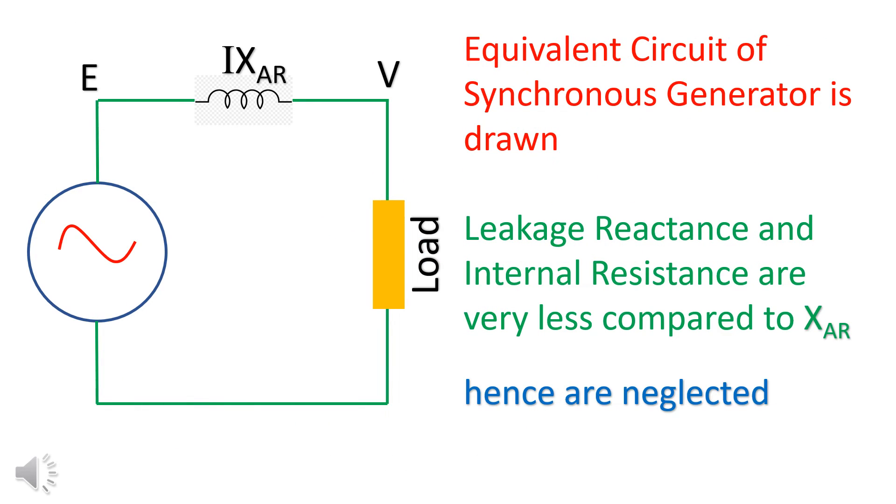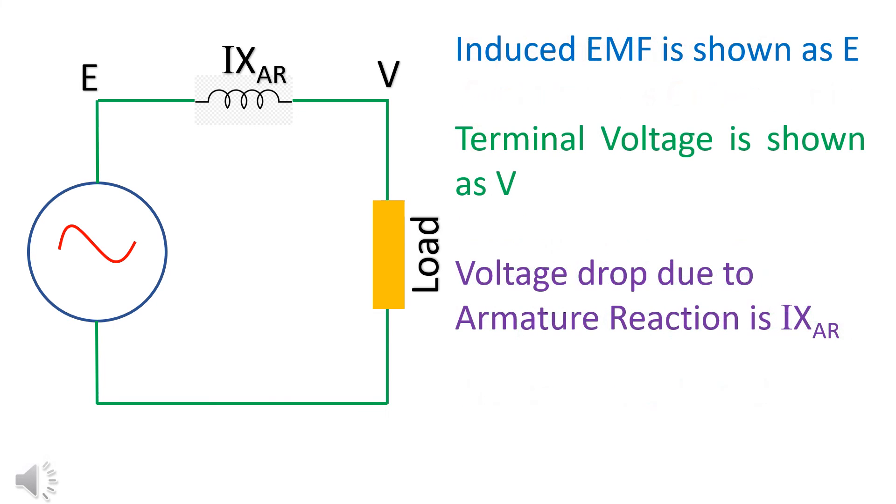Equivalent circuit of synchronous generator is drawn. Since leakage reactance and internal resistance of stator winding are very small, these are neglected. EMF is represented by E, voltage by V, and voltage drop is represented by IXₐᵣ.